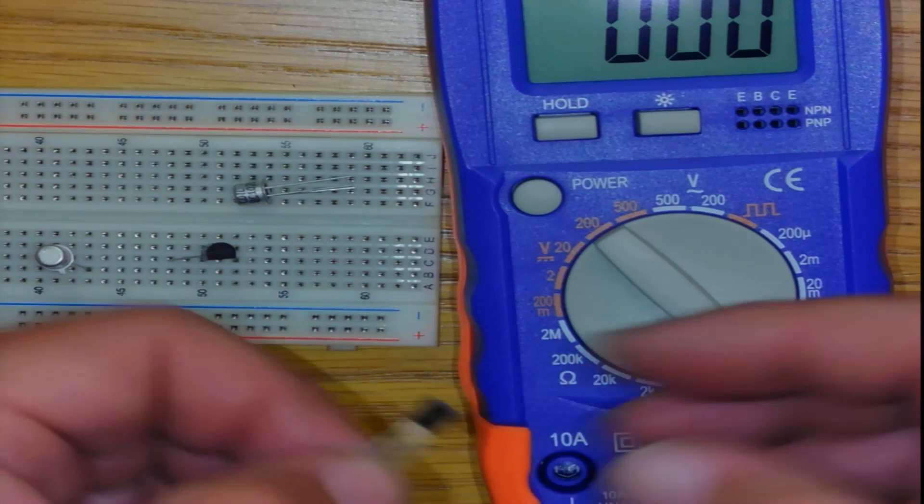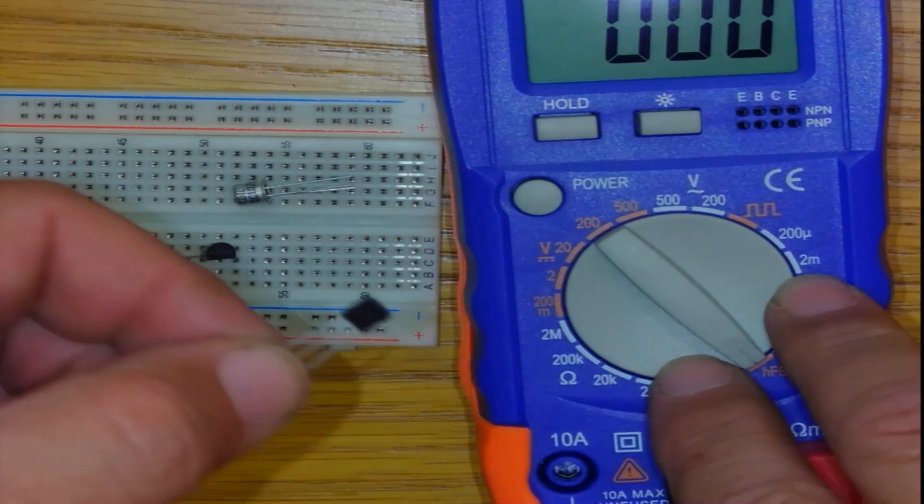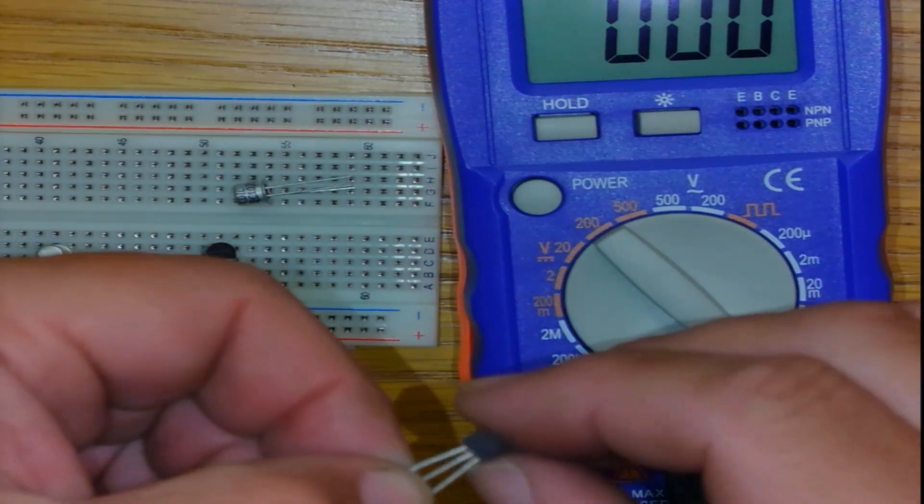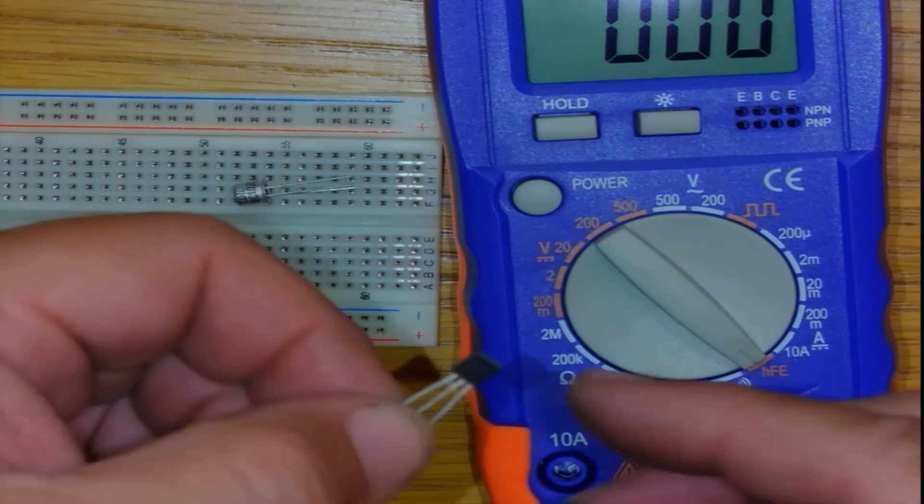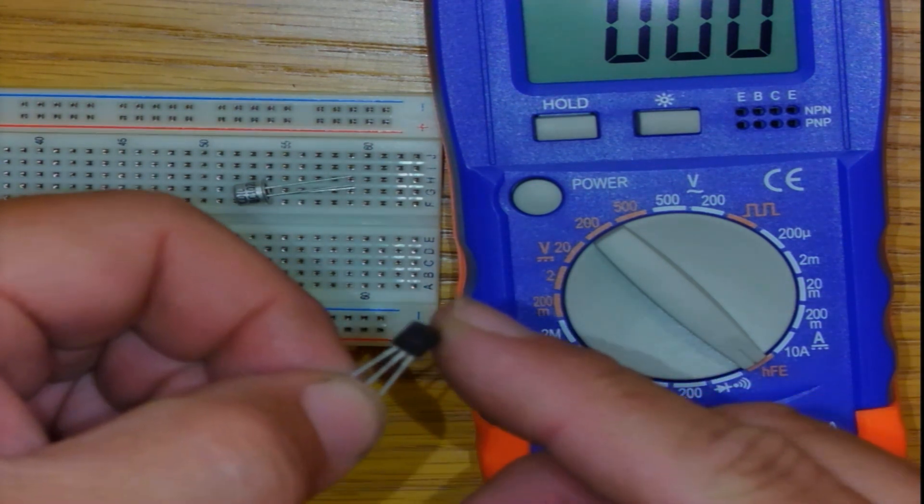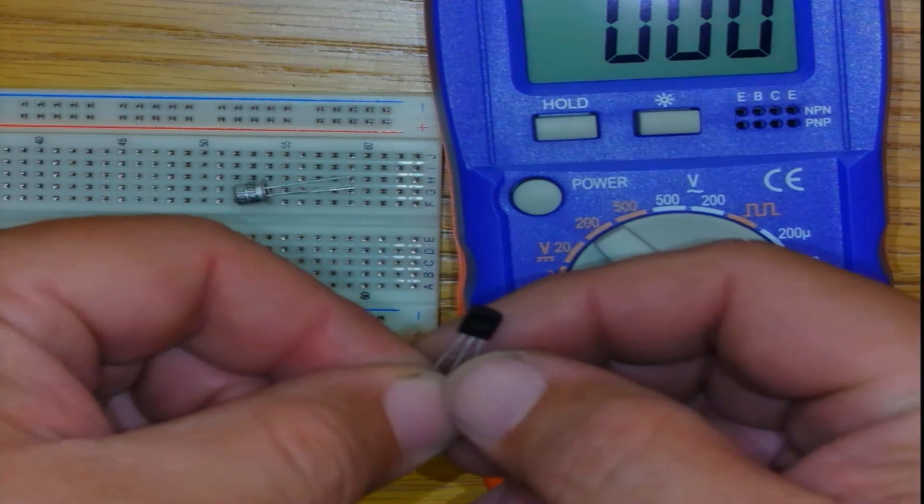Good afternoon ladies and gentlemen, welcome back to another exciting episode of how to identify components in the engineering labs for electrical engineering at VUT. Today we're looking at transistors.